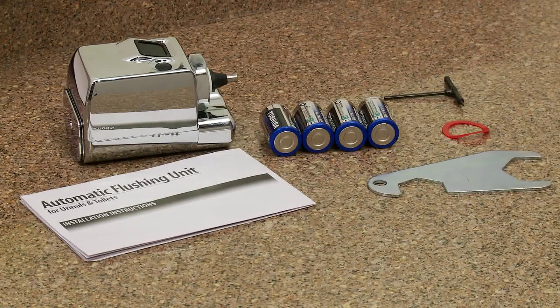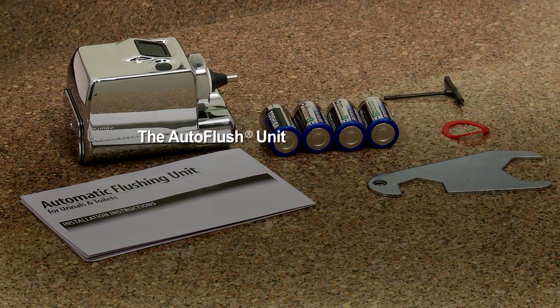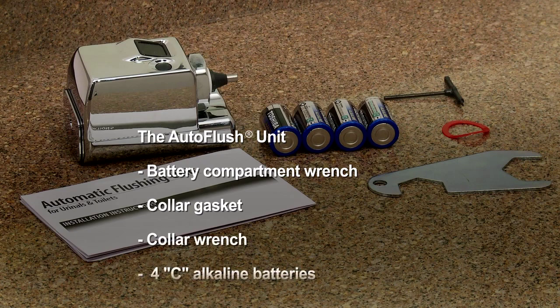The Auto Flush package includes the Auto Flush unit, a battery compartment wrench, a collar gasket, a collar wrench, and 4C alkaline batteries.